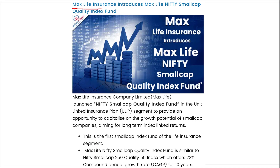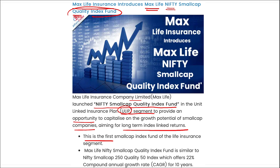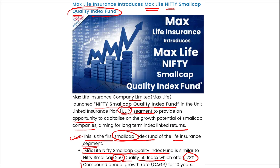Max Life Insurance has introduced the Max Life Nifty Small Cap Quality Index Fund, a ULIP segment fund designed to provide an opportunity to grow through the potential of small-cap companies for long-term index-linked returns. This is the first small-cap index fund in the life insurance segment, and it is similar to the Nifty Small Cap 250 Quality 50 Index, which offers a 22% compound annual growth rate over 10 years.